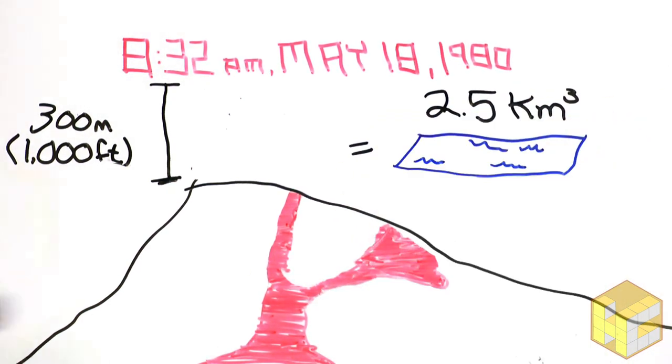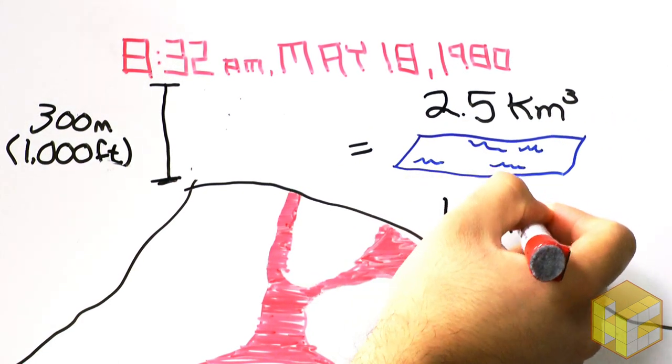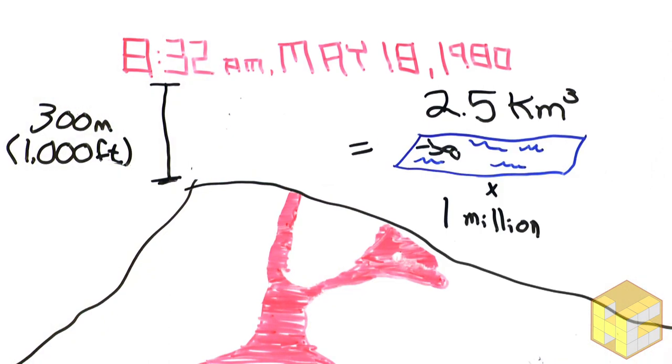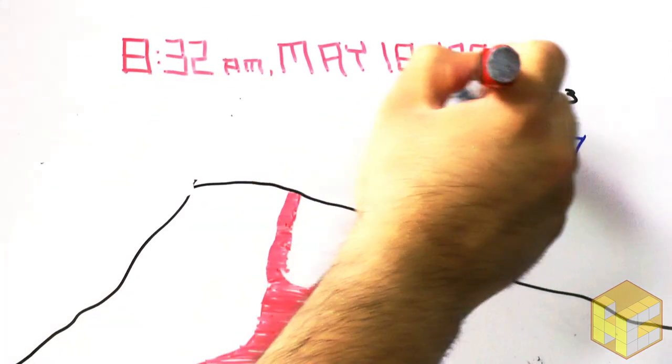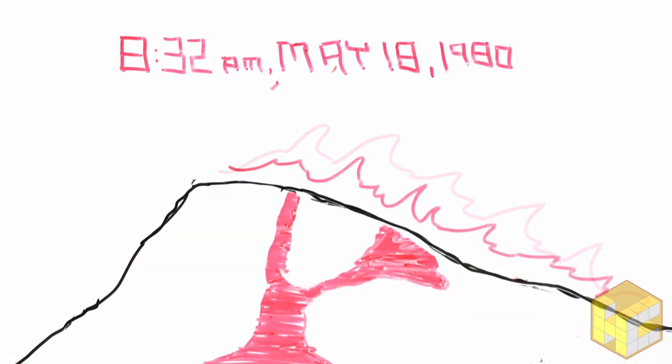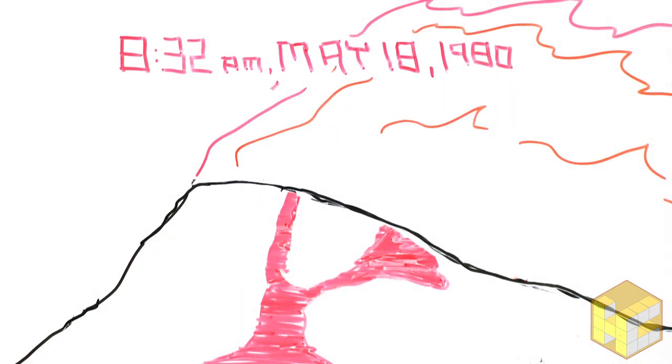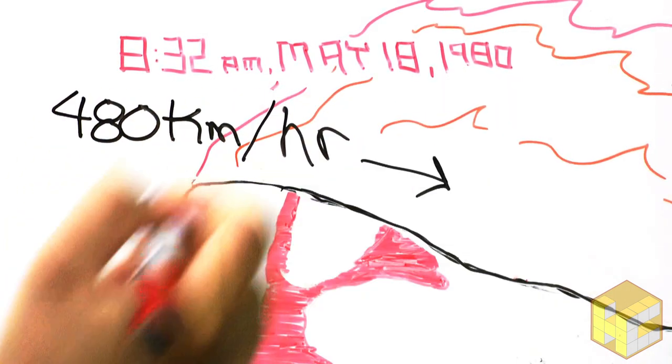To put that in perspective, that's the equivalent of one million Olympic swimming pools. The pent-up energy within the mountain exploded all at once, driving ash and debris upwards and outwards at 480 kilometers per hour.